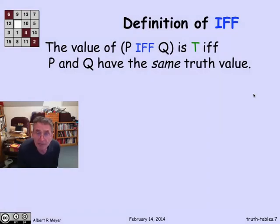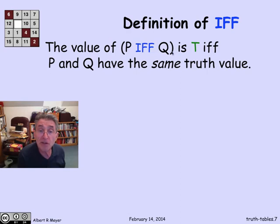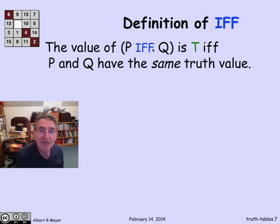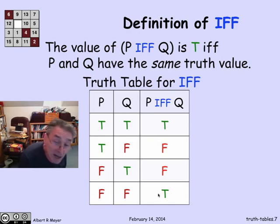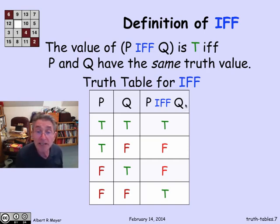This brings us to a useful connective we haven't talked about yet: 'if and only if'. The value of p if and only if q is true if and only if p and q have the same truth value. Since the English phrase 'if and only if' can be confusing when mixed with the operator, let's use the truth table to disambiguate. When both are true, p if and only if q is true; when both are false, it's true; otherwise it's false. You can check that p if and only if q is true exactly when the complement of p xor q is true.